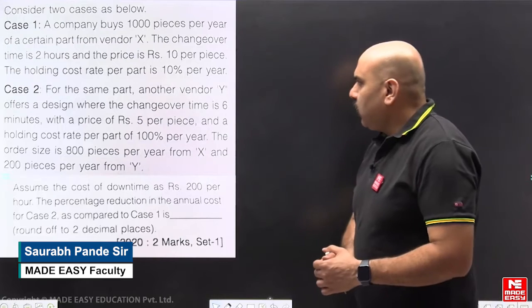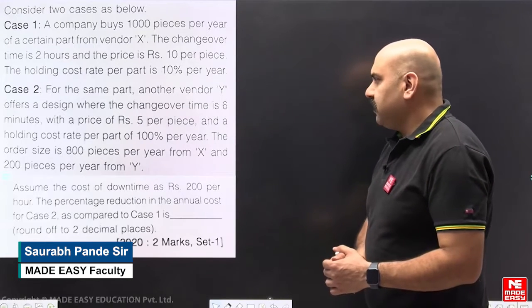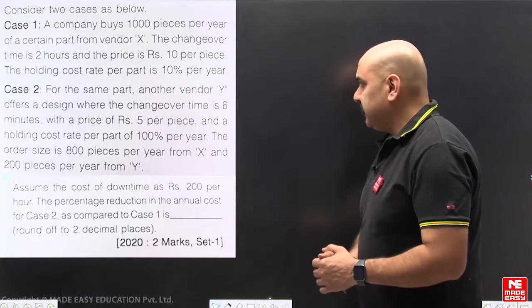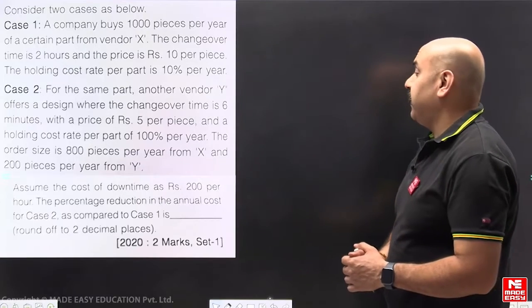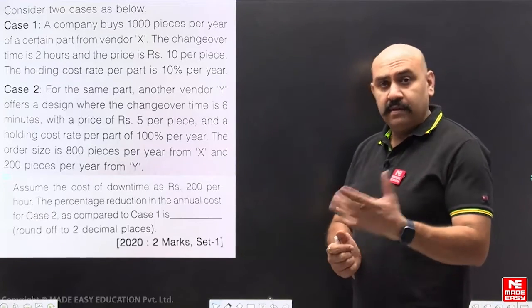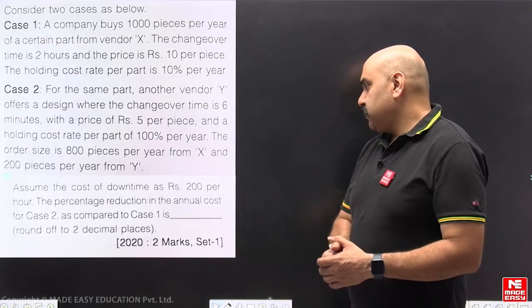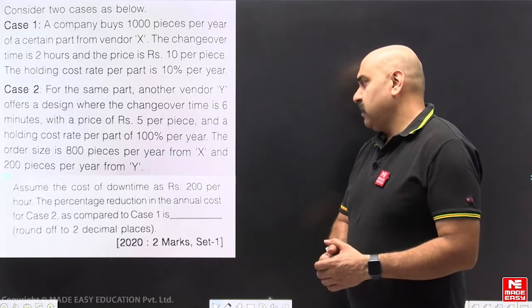For the same part, another vendor Y offers a design where the changeover time is 6 minutes with a price of Rs. 5 per piece and a holding cost rate per part of 100% per year, means holding rate will be Rs. 5. The order size is 800 pieces per year from X and 200 pieces per year from Y.